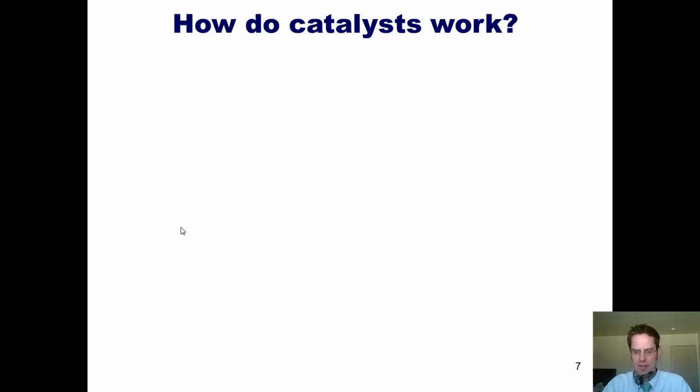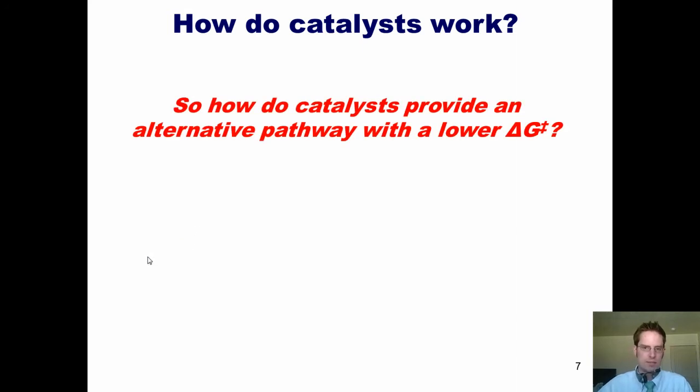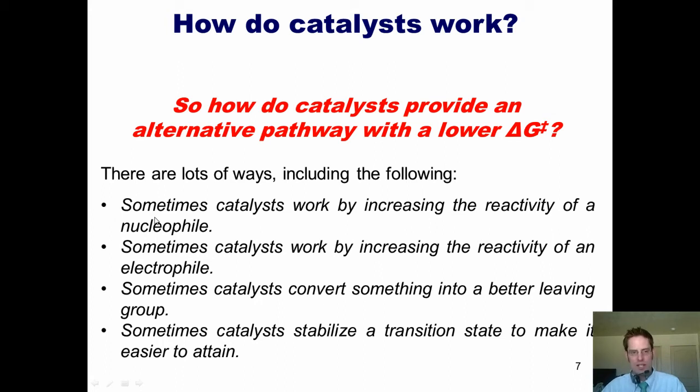As I've stated, catalysis provides an alternate pathway between reactants and products that has a lower activation energy than the uncatalyzed pathway. So the question is, how do catalysts actually do that? Well, there are lots of ways, which include: sometimes catalysts work by increasing the reactivity of a nucleophile, sometimes they increase the reactivity of an electrophile, sometimes they convert something into a better leaving group, and sometimes they stabilize a transition state to make it easier to reach that. In other words, they take a normally high energy transition state and bring it down into a situation where it's at a lower energy level because it's been more stabilized. There are probably other ways in which catalysts work as well. The sad reality is that, as much as I wish I could, I don't have time to show you excessive examples of each of these different modes of catalysis. This makes me particularly sad because my PhD work was actually done developing new asymmetric or chiral catalysts. So I have fond feelings for this subject.